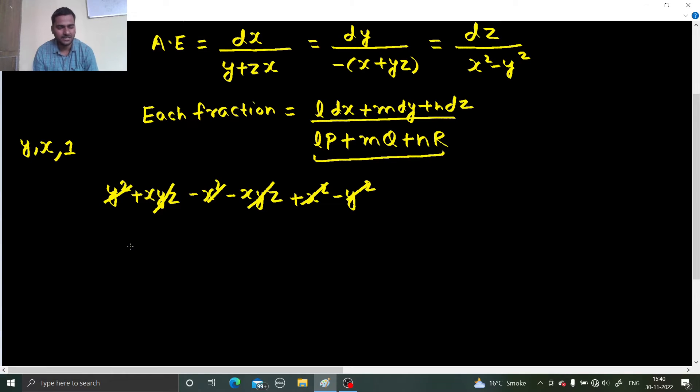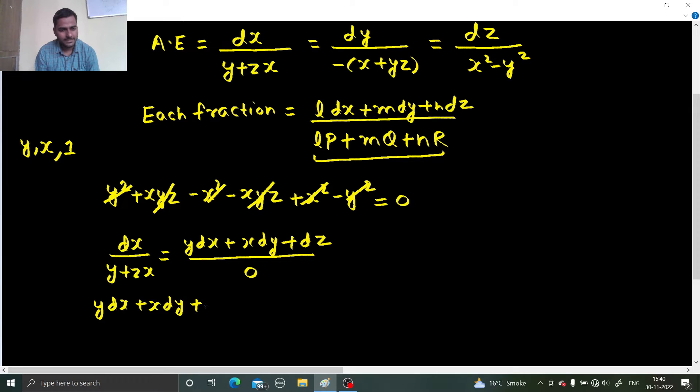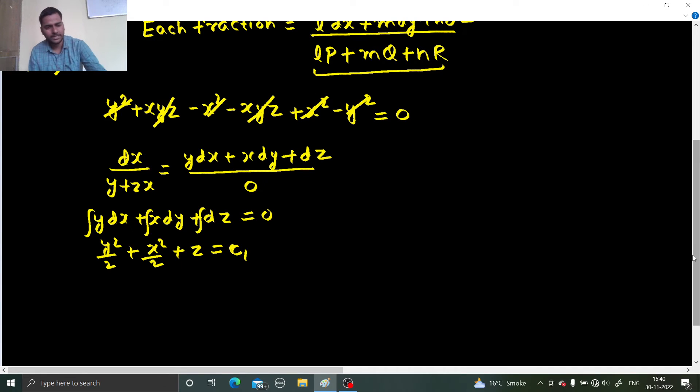So I can say that any fraction, let us say take the first one. So dx by y plus zx, this equals to y dx plus x dy plus dz divided by denominator is going to become 0 only. So you are getting y dx plus x dy plus dz, this equals to 0. Let us integrate it. You are going to get y square by 2 plus x square by 2 plus z, this equals to c1. Fine. So you are getting it equal to c1.